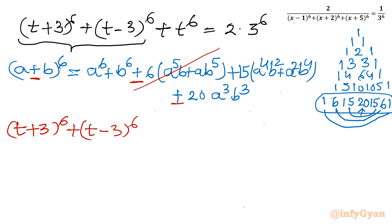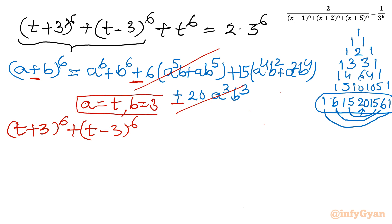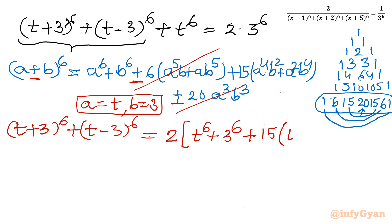When we add these two terms, where the sign change is present it will cancel out, and the remaining terms will be doubled. So with a = t and b = 3, and doubling the result: we get 2 times [t⁶ plus 3⁶ plus 15 times (t⁴ · 3² plus t² · 3⁴)], which gives us 2 times [t⁶ plus 3⁶ plus 15 times (9t⁴ plus 81t²)].